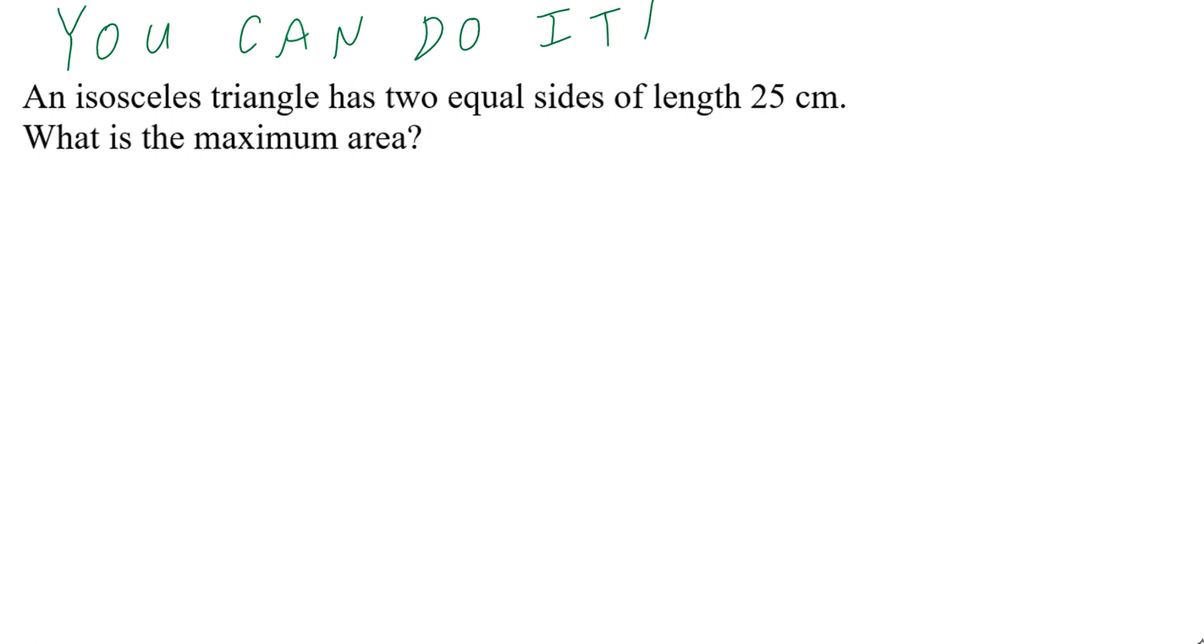Hi everyone, let's take a look at the following example using trigonometry. It's an optimization example using trig. An isosceles triangle has two equal sides of length 25 centimeters. What is the maximum area?